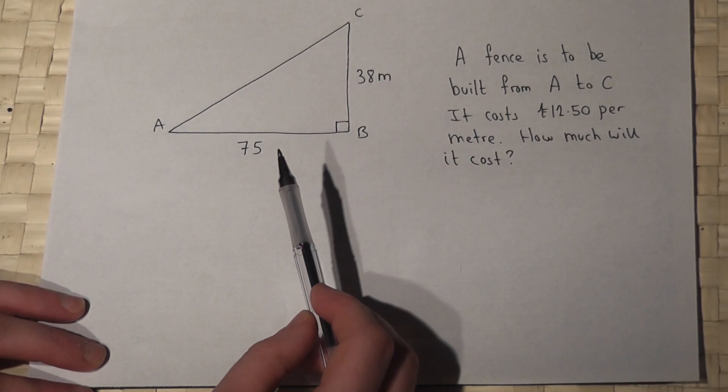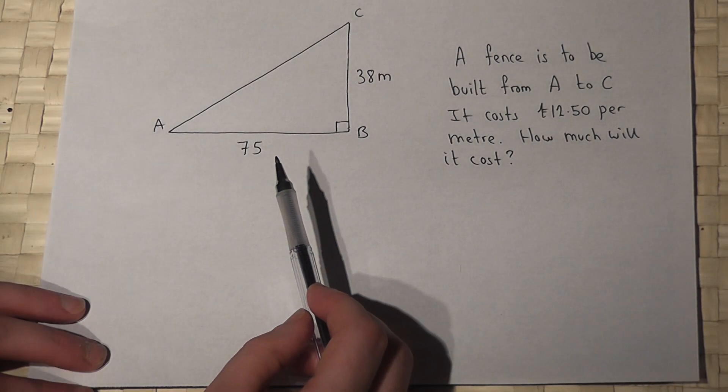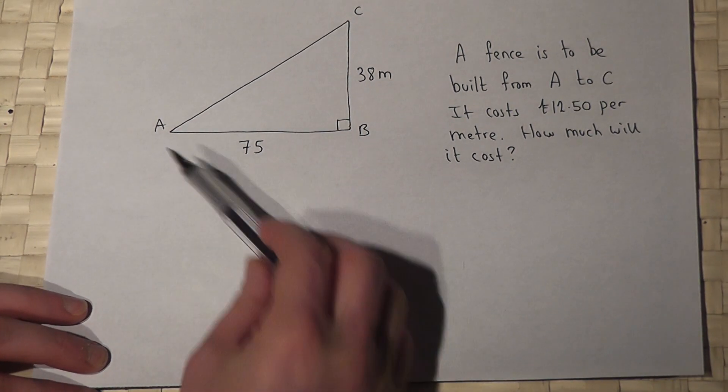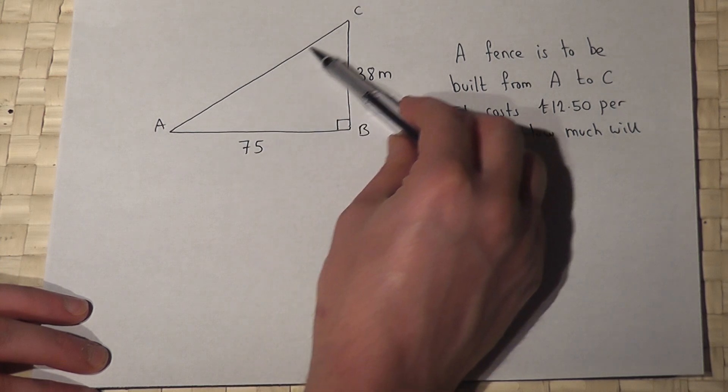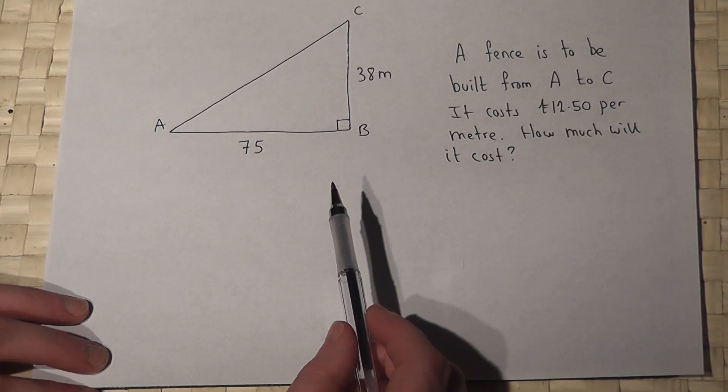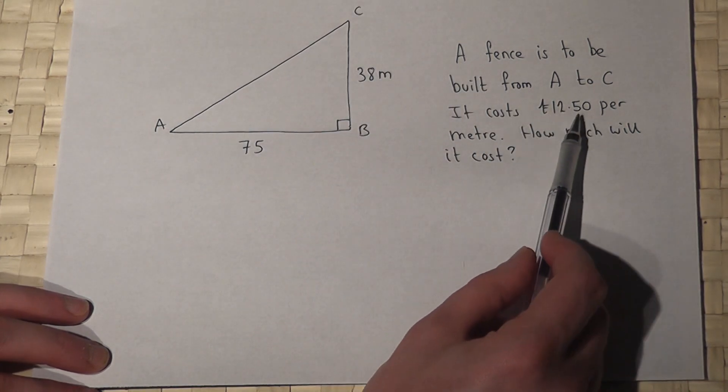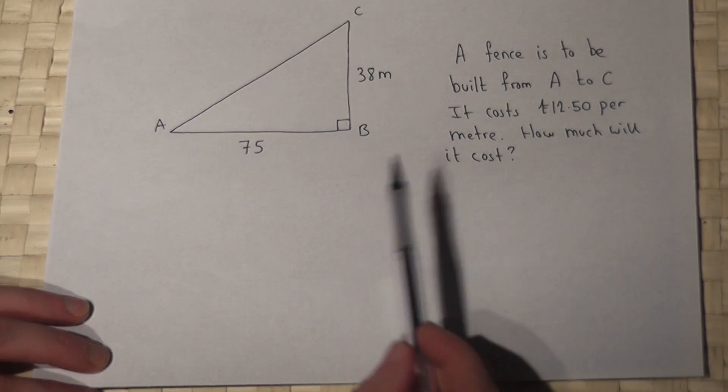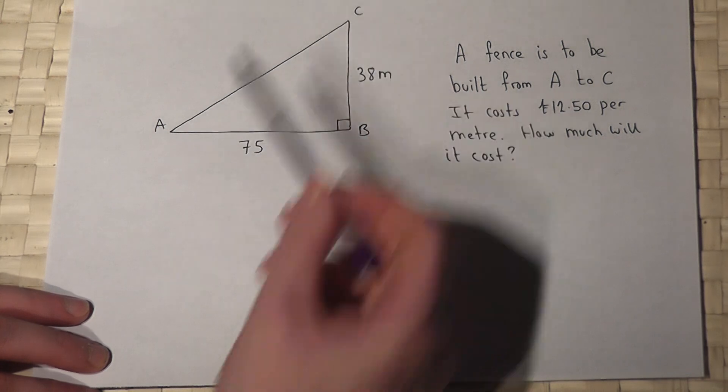This video reviews a Pythagoras question in context. We want to build a fence from A to C and it costs £12.50 per metre. The question is how much will it cost to build a fence from A to C?